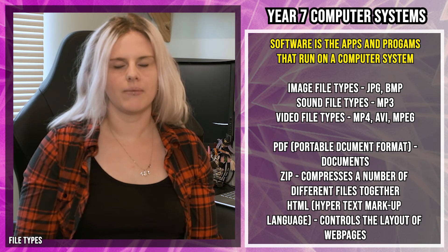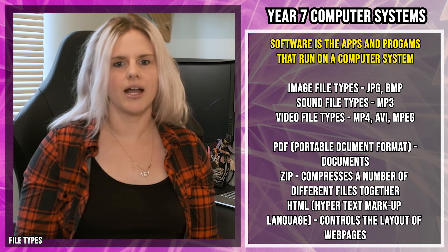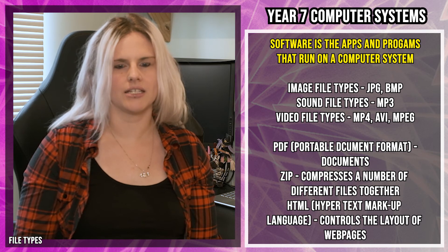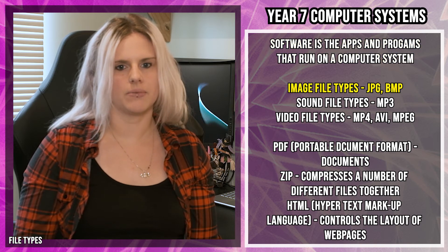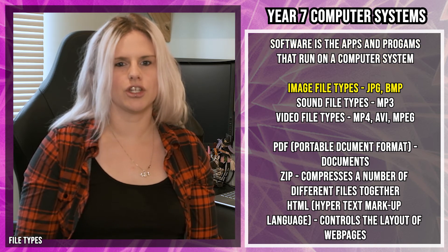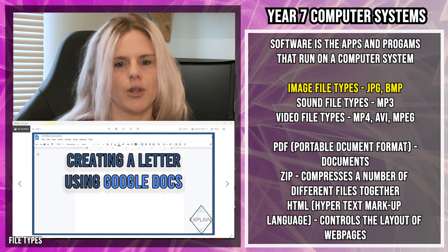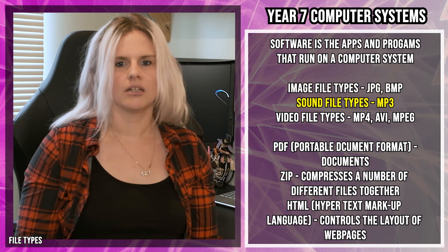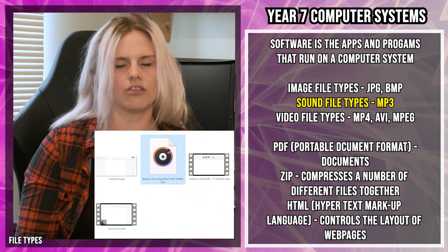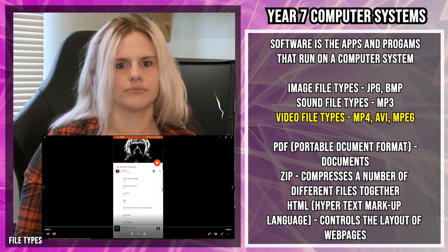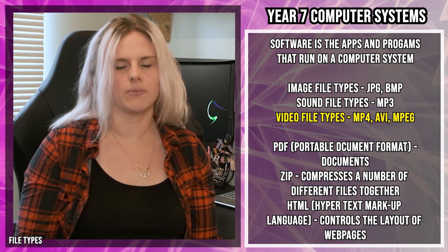Software is all the apps and programs that run on your computer system. We're going to look at six different file extensions and go over which types of software will open them. The first is image file types — JPEGs and BMPs are the two image file types you need to know. If you click on a file with a .jpeg extension, image software will open it. The sound file type you need to know is MP3 — a sound player will open. Video file types include AVI and MPEG — if you click on a file with one of these extensions, a video player will open.